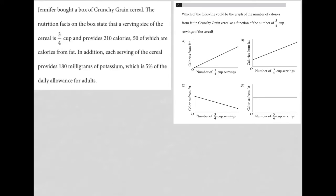The information provided for this question says that Jennifer bought a box of Crunchy Grain cereal. The nutrition facts on the box state that a serving of the cereal is three-fourths cup and provides 210 calories, 50 of which are calories from fat. In addition, each serving of the cereal provides 180 milligrams of potassium, which is 5% of the daily allowance for adults.